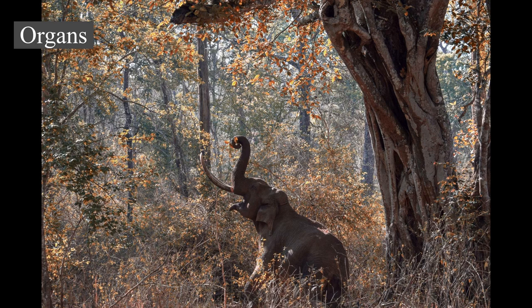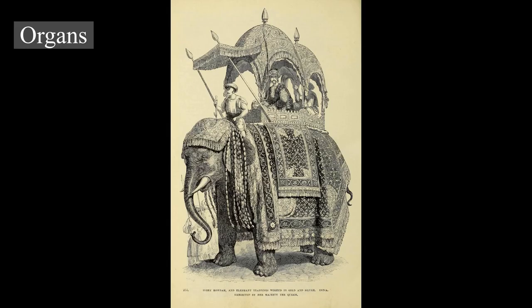The female's mammary glands occupy the space between the front legs, which puts the suckling calf within reach of the female's trunk. Elephants have a unique organ, the temporal gland, located on both sides of the head. This organ is associated with sexual behavior and males secrete a fluid from it when in musth. Females have also been observed with secretions from the temporal glands.